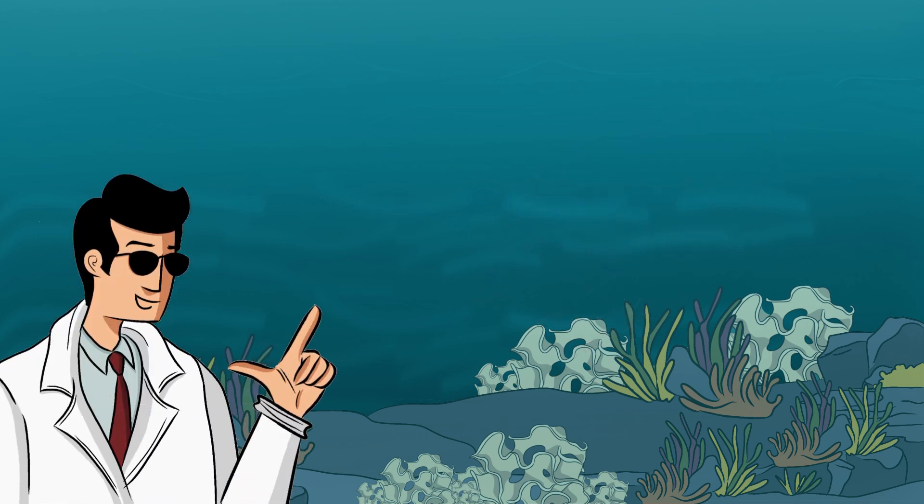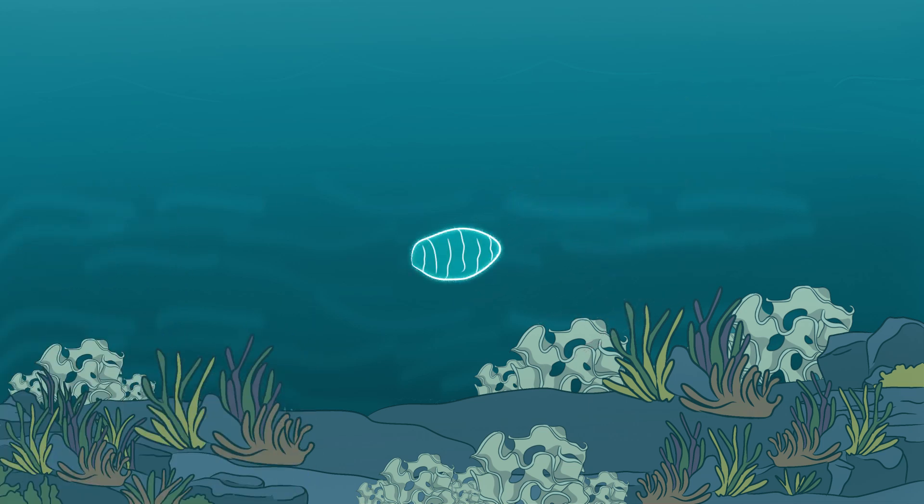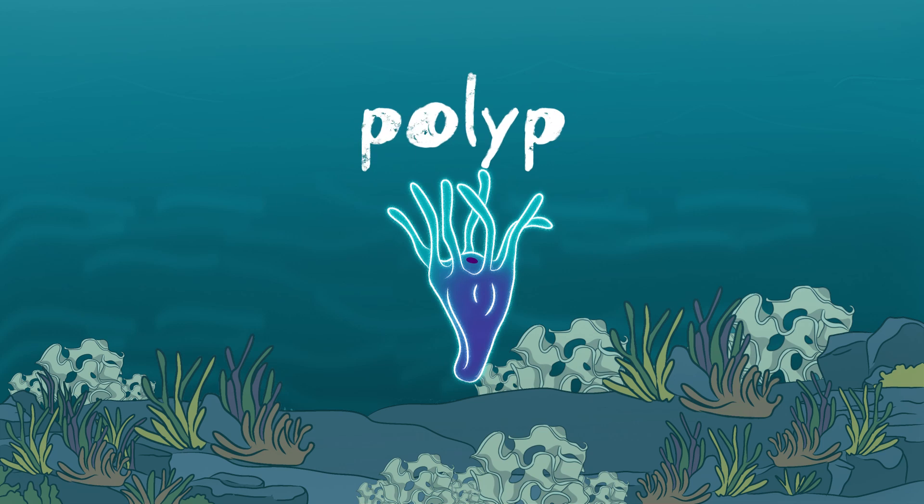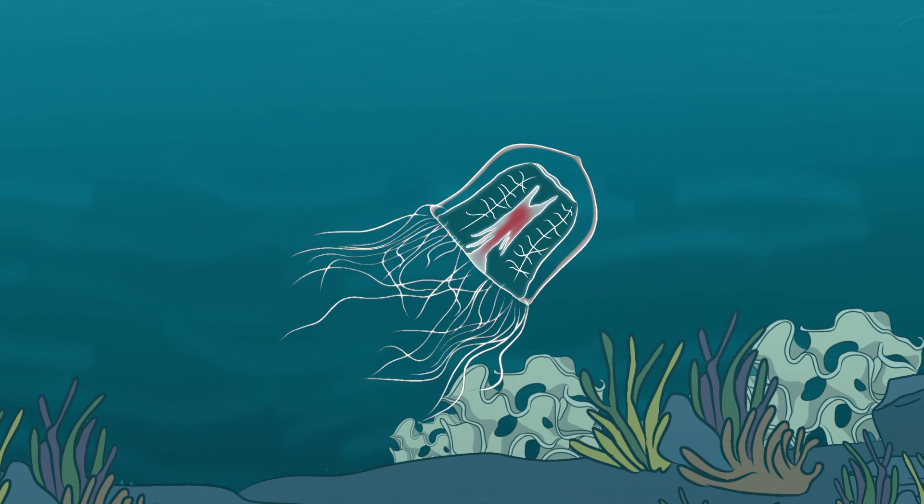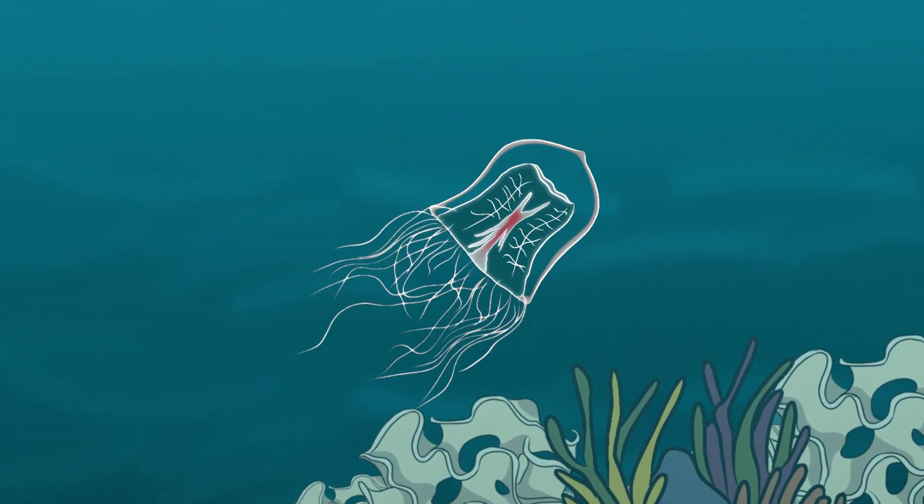Like all jellyfish, it begins its journey as a tiny, free-floating larva called a planula, drifting through the water until it finds a safe place to settle. There, it transforms into a polyp — a small, stationary form that clings to rocks or coral. Over time, it matures into a full-grown jellyfish known as a medusa, pulsating gracefully through the sea.